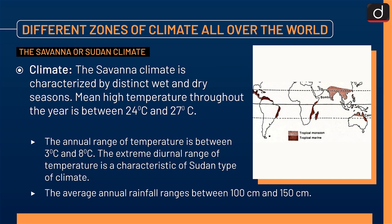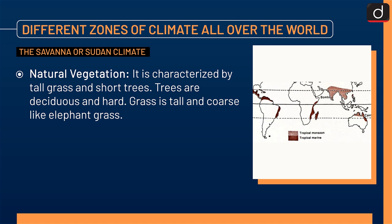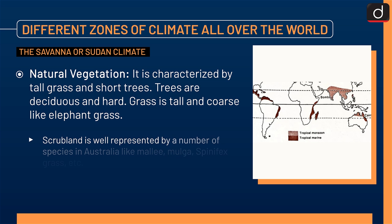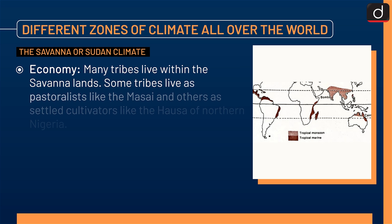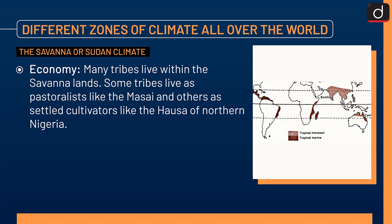Natural vegetation is characterized by tall grass and short trees. Trees are deciduous and hard. Grass is tall and coarse like elephant grass. Scrubland is well represented by a number of species in Australia like Mallee, Mulga, Spinifex grass, etc. Economy: many tribes live within the Savannah lands. Some tribes live as pastoralists like the Maasai, and others as settled cultivators like the Hausa of Northern Nigeria. However, agriculture is not much developed.